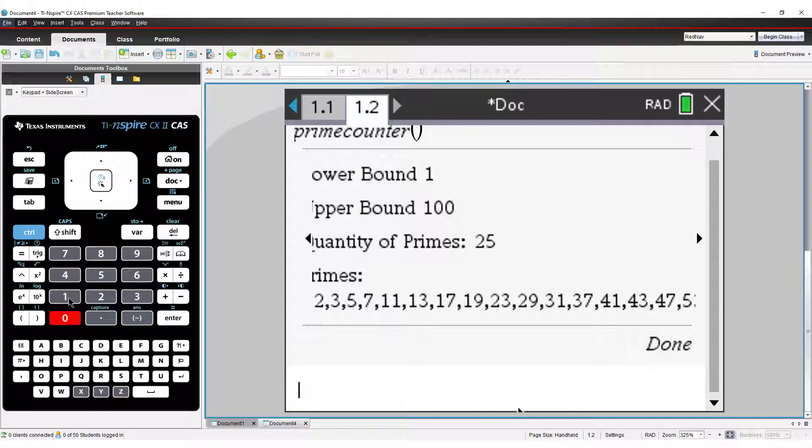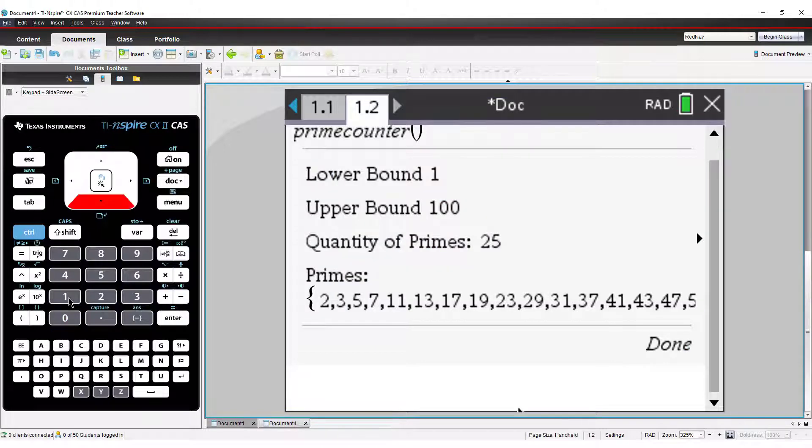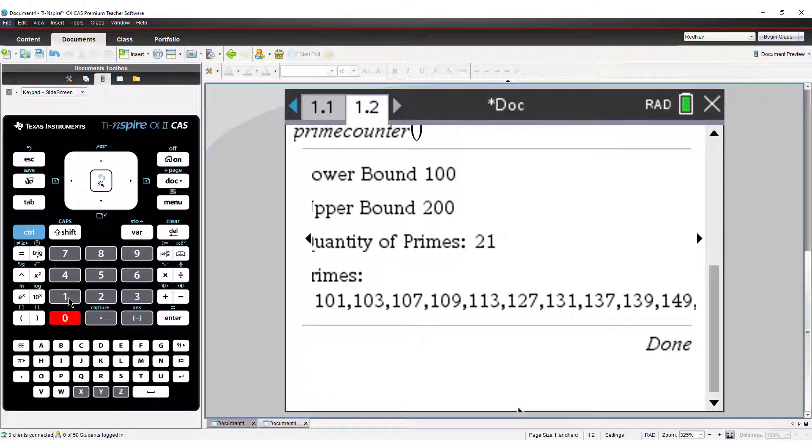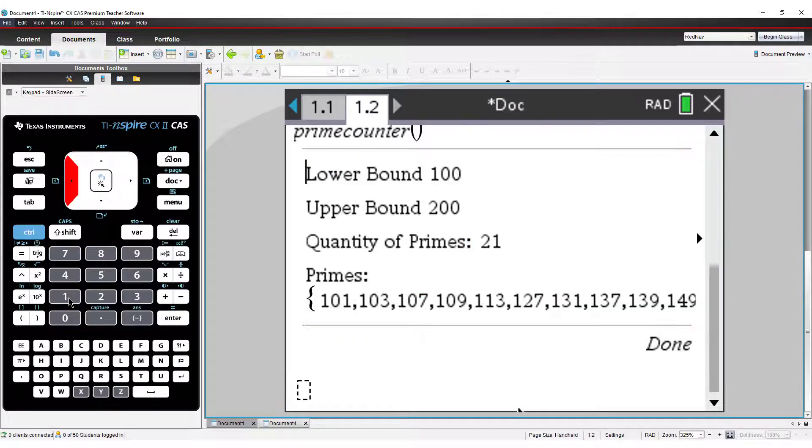Now let's compare the result between 100 and 200. So there are fewer primes between 100 and 200 than there were between 1 and 100.